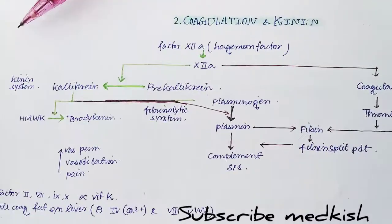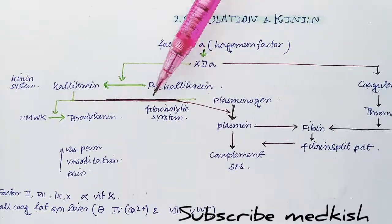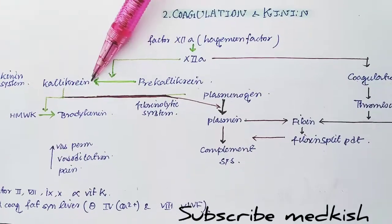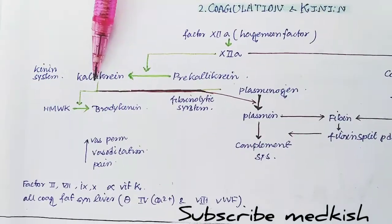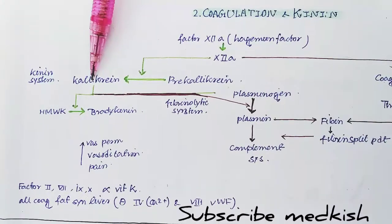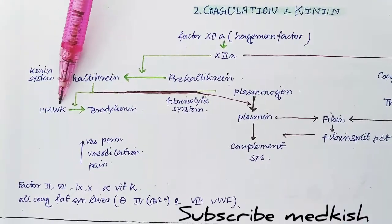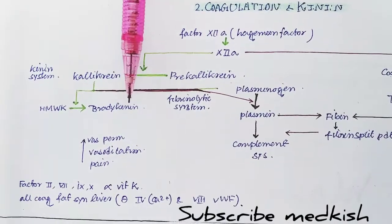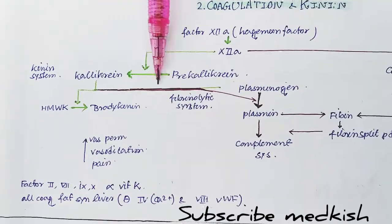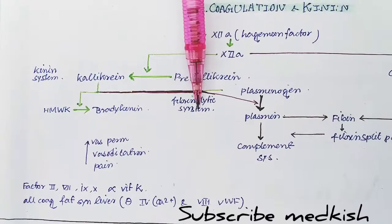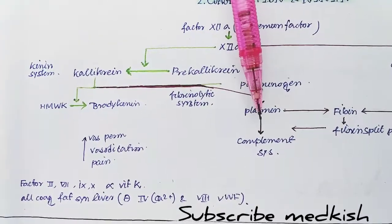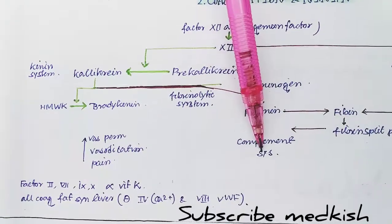In the kinase system, it will convert pre-kallikrein to kallikrein. Activated kallikrein converts high molecular weight kininogen to bradykinin, and kallikrein also in the fibrinolytic system converts plasminogen into plasmin. The plasmin now stimulates the complement system.